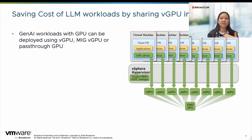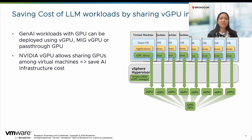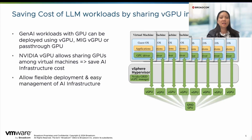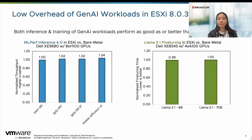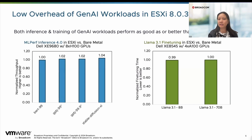In VCF, Gen AI workloads can be deployed using vGPU, MIG vGPU, or even pass-through — three different options customers can choose from. vGPU differs from pass-through because it allows multiple VMs to share the same set of GPU resources, reducing the GPU requirement especially when the workload is more lightweight with smaller models. Another benefit is that vGPU allows more flexible deployment and easier management of AI infrastructure. Here, for ML inference and Gen AI workloads, we can see it performs as good as bare metal or even better in some cases, and for fine-tuning large language models like LLAMA 3.1, we also achieve very close-to-bare-metal performance on single-node GPU. That showcases the benefit — customers can have more flexible data center management without suffering from performance issues.